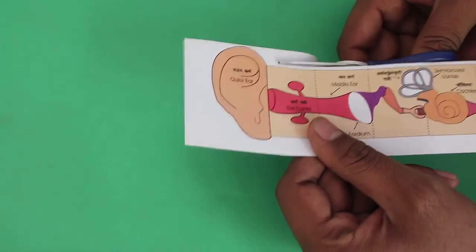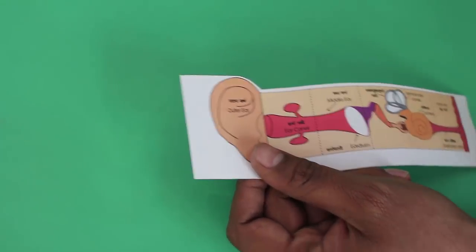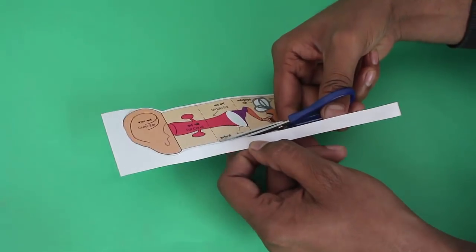What we see externally is the outer ear. Sound waves enter the ear canal and make the eardrum vibrate.